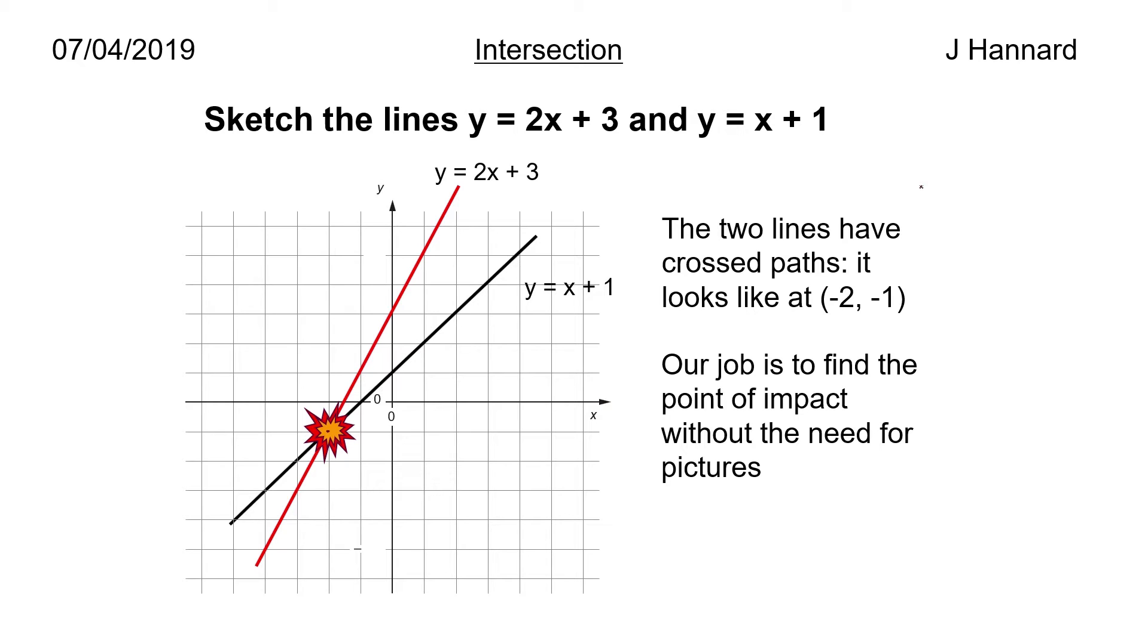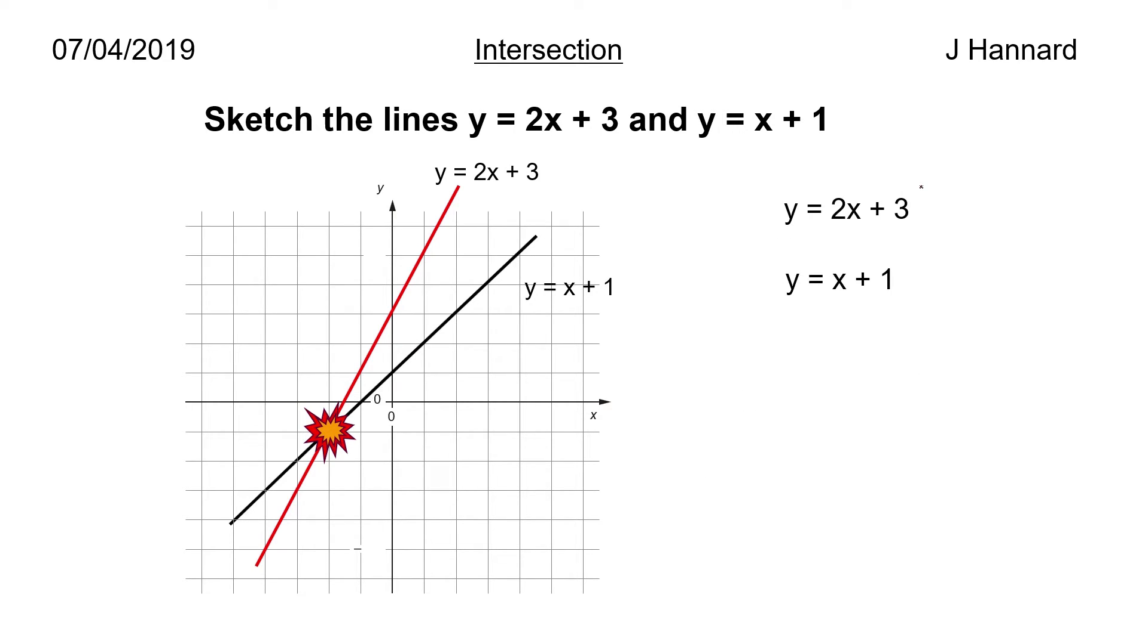If we have y equals 2x plus 3 and y equals x plus 1, then can't we just say 2x plus 3 equals x plus 1 because they both are equal to y? So we take what y equals here and we sub it in to where y is there. We sub that in for everywhere it says y in this equation because they both equal y.